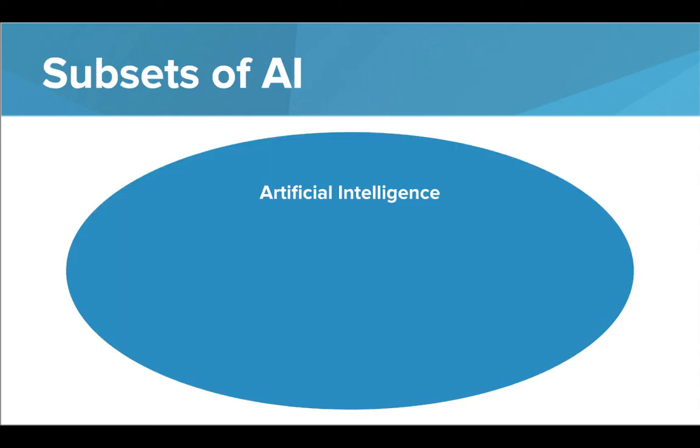We can think of AI as a concept or principle that categorizes different types of algorithms. Certain types of algorithms are categorized as AI because they enable machines to make intelligent decisions. Within the field of AI, there are subcategories of algorithms. One such category is machine learning.